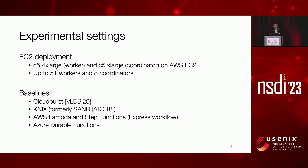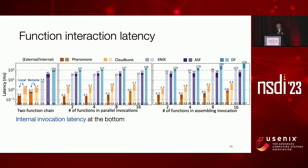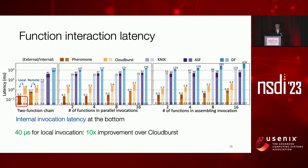We evaluate our system Pheromony on an EC2 cluster, including four serverless platforms as baselines — Cloudburst and Knative — as well as two commercial platforms, AWS Lambda Step Functions and Azure Durable Functions. We compare function interaction performance across three popular interaction patterns: function chain, parallel fan-out invocation, and fan-in assembly invocation, varying the degree of fan-out and fan-in. Our system Pheromony can significantly outperform other serverless platforms regardless of the interaction pattern. In particular, Pheromony takes only 40 microseconds to locally invoke a warm function instance, which is 10 times better than its closest baseline, Cloudburst.